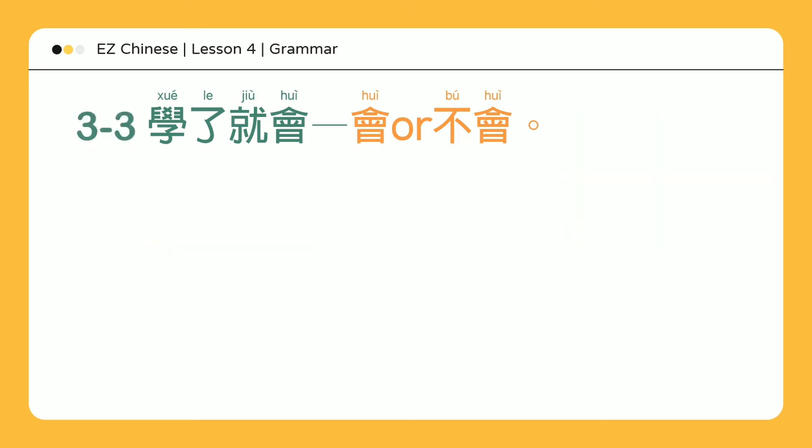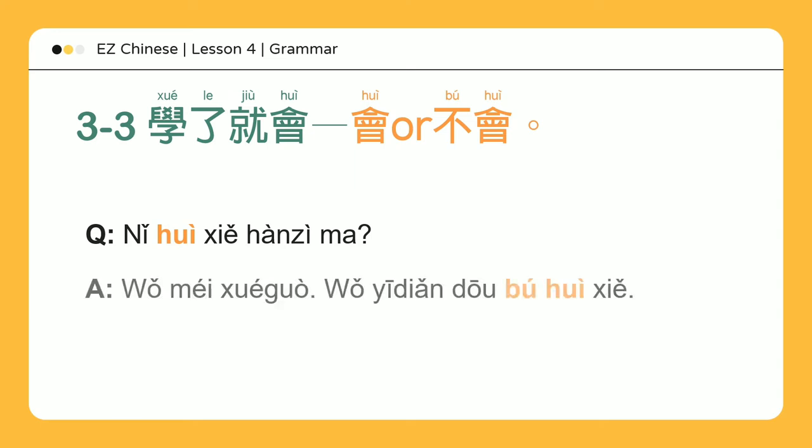你会写汉字吗? — Do you know how to write Chinese? 我没学过 — I've never learned how. 我一点都不会写 — I can't write any at all.